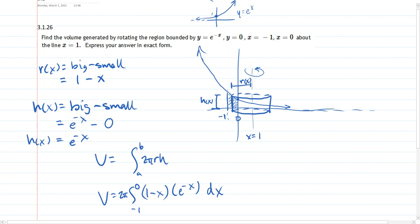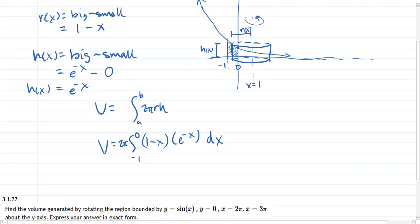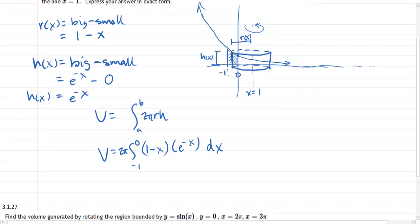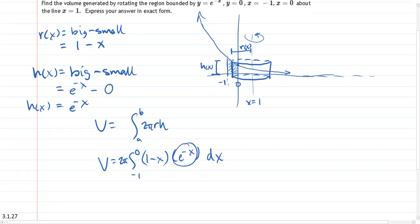Now again, it's dx because if you look at this cross section, which I drew way too big, you have to move it left and right to cover the region, meaning you have to change the x-coordinate. That's why this is an x antiderivative. So how do we integrate this? Easier said than done. What we're going to do is distribute here. We're going to distribute e to the negative x across these two parts. So e to the negative x times 1 is e to the negative x minus, I'm going to move the minus over here, minus x e to the negative x.